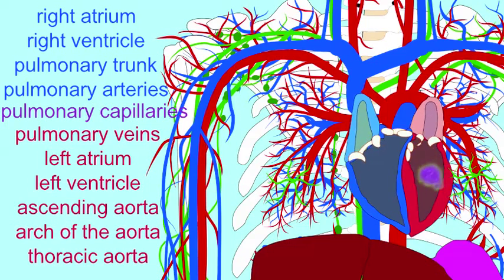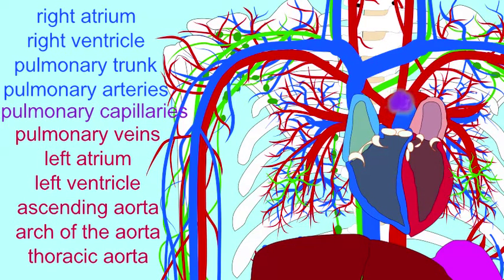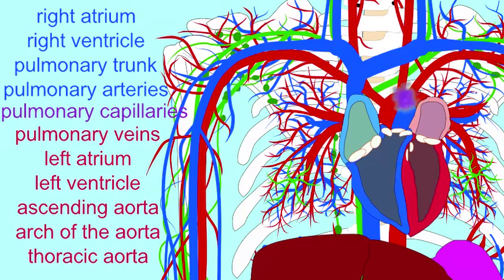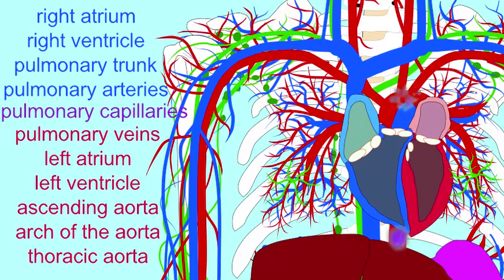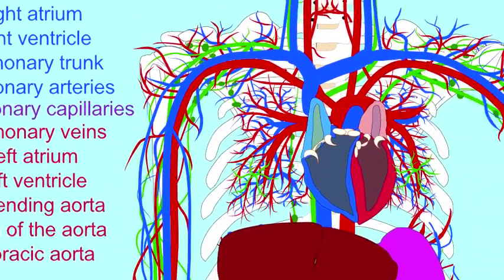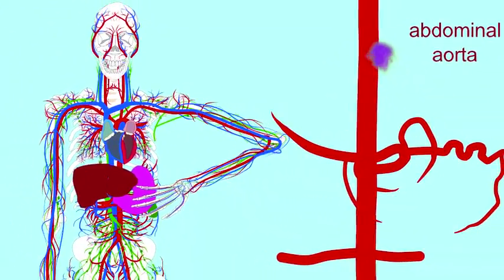From the left atrium, blood passes to the left ventricle, then the ascending aorta and the arch of the aorta. From there, the blood would pass through the descending aorta — first the thoracic aorta in the thorax and then the abdominal aorta in the abdomen.